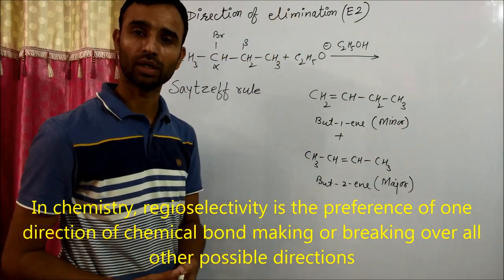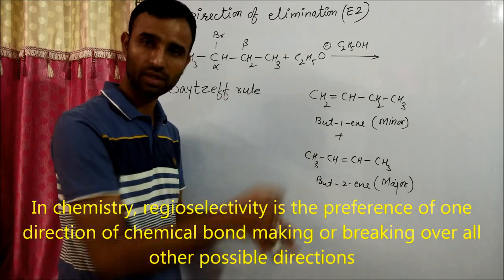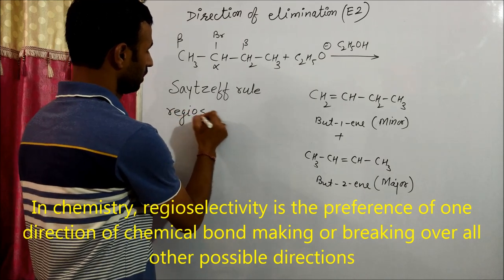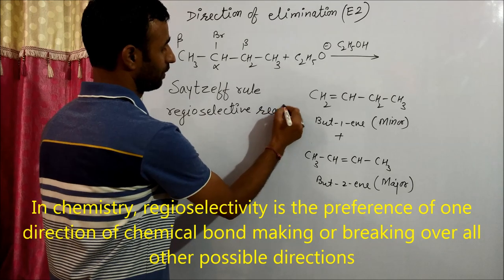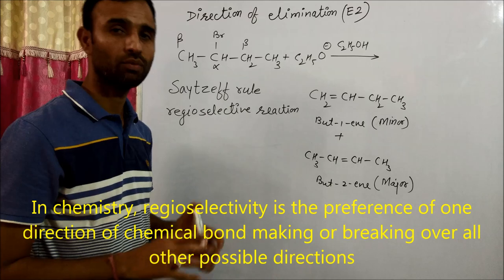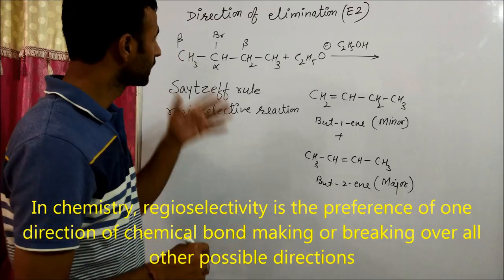So but-2-ene is the major product and this is minor. And the reaction in which one of the isomers is formed as a major product in more amount than the other, such reaction is known as regioselective reaction.